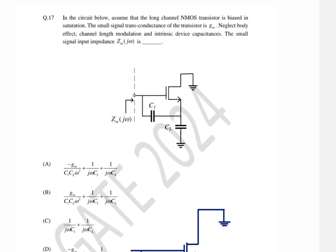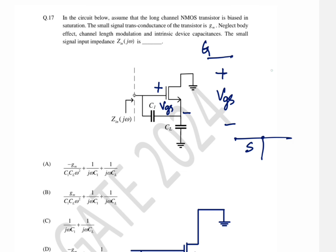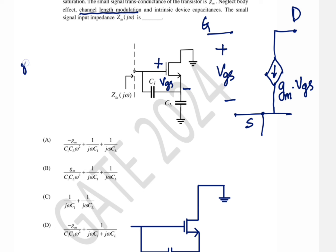The small signal transconductance of the transistor is gm. If you apply a gate-to-source voltage vgs, then from drain to source you will get a current which is equal to gm times vgs. They have also said there is no body effect and no channel length modulation.